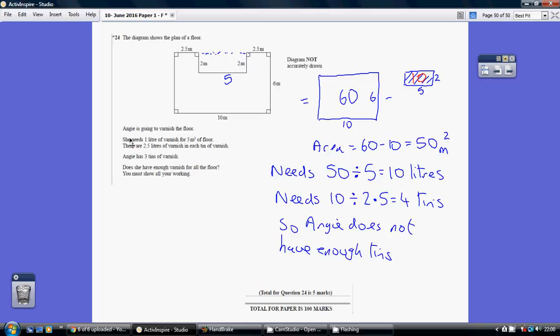Now that's handy because we're told that we need one litre for every 5 metres squared. Well we've got 50 metres squared so we need 10 litres.